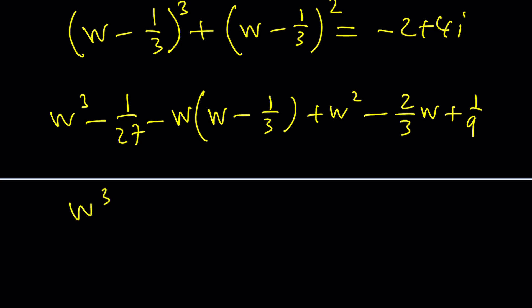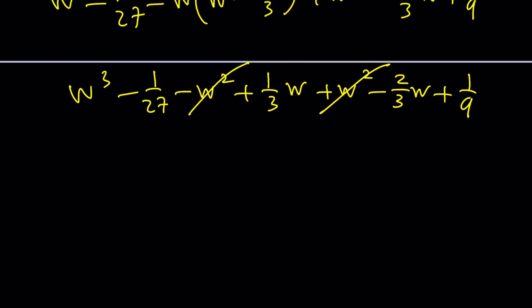So this gives me the following. W cubed minus one over 27 minus w squared plus one over three w plus w squared minus two over three w plus one over nine equals something. Now notice that w squared cancels out. That's not by coincidence. That was the purpose. So we want to get rid of the w squared. That's how you can solve cubic equations. At least that's one way to do it. I subtract these. And then plus one ninth is equal to negative two plus four i.